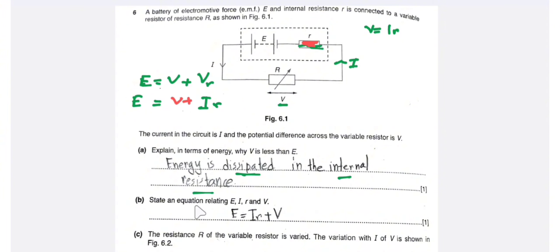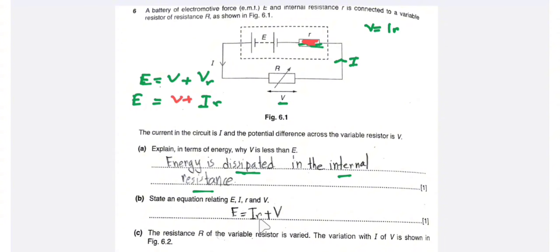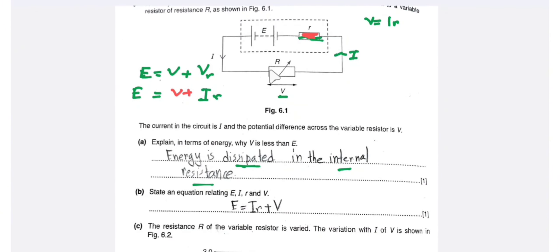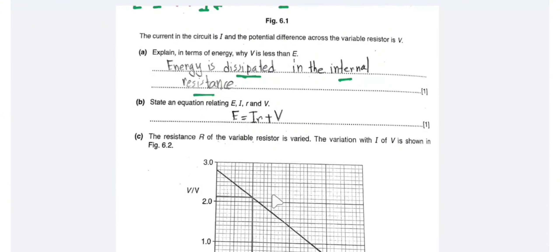Now state an equation relating E, I, R, and V. We know that EMF is equal to voltage plus the voltage across the internal resistance. So E = V + Ir, where Ir is the voltage drop across the internal resistance.